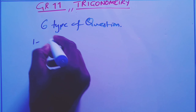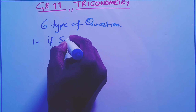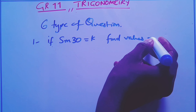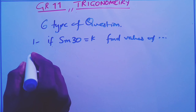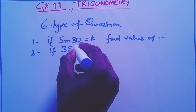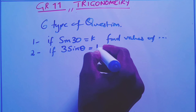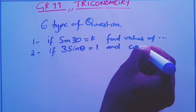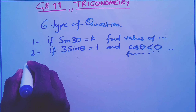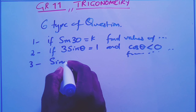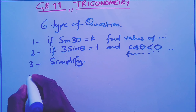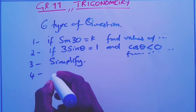The first type is when they say, for example, sine of 30 equals k, and they ask you to find certain values. The second type is when they give you something like three sine theta equals one and cos theta is less than zero, and they ask you to find values. The third type is where you have to simplify the ratios.